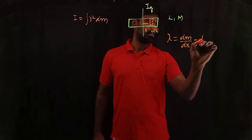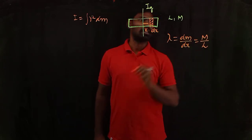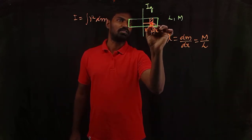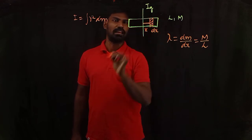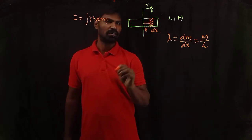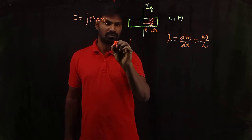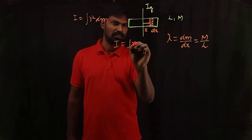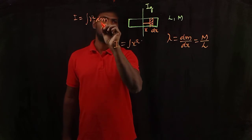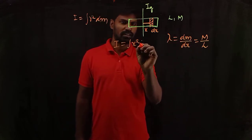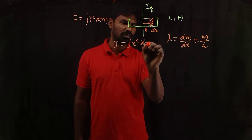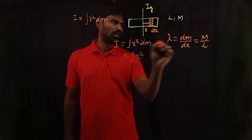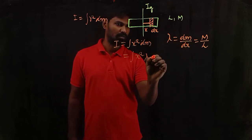If you integrate it, you can write lambda as mass divided by length. I'm calculating the moment of inertia of this strip with respect to this axis. For an elemental mass, the moment of inertia is I equal to x² dm, since the distance of this strip from the axis of rotation is x. Substituting dm equals lambda dx into this expression gives I equal to the integral of x² times lambda dx.